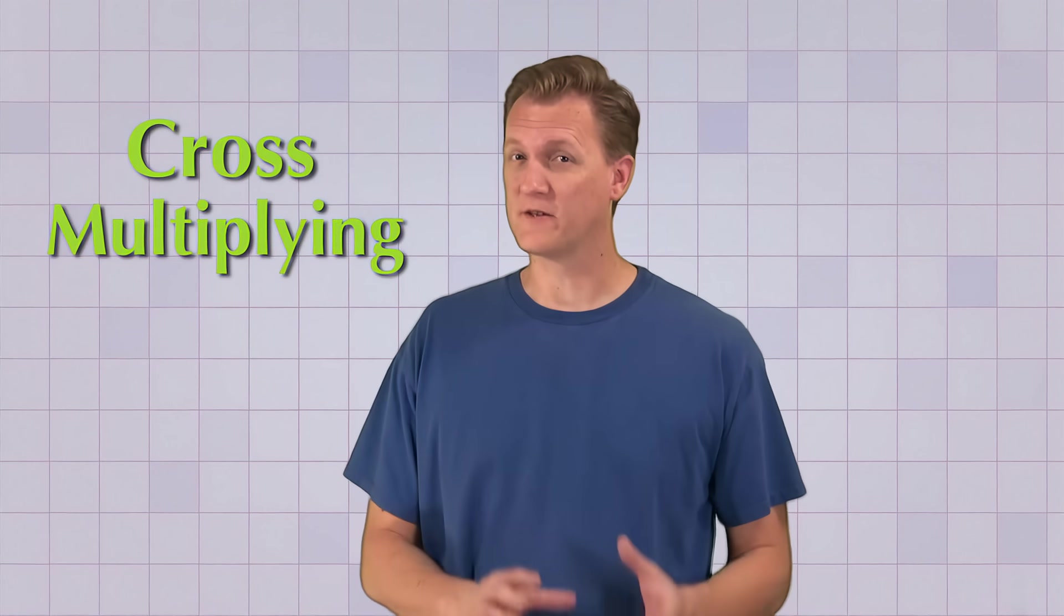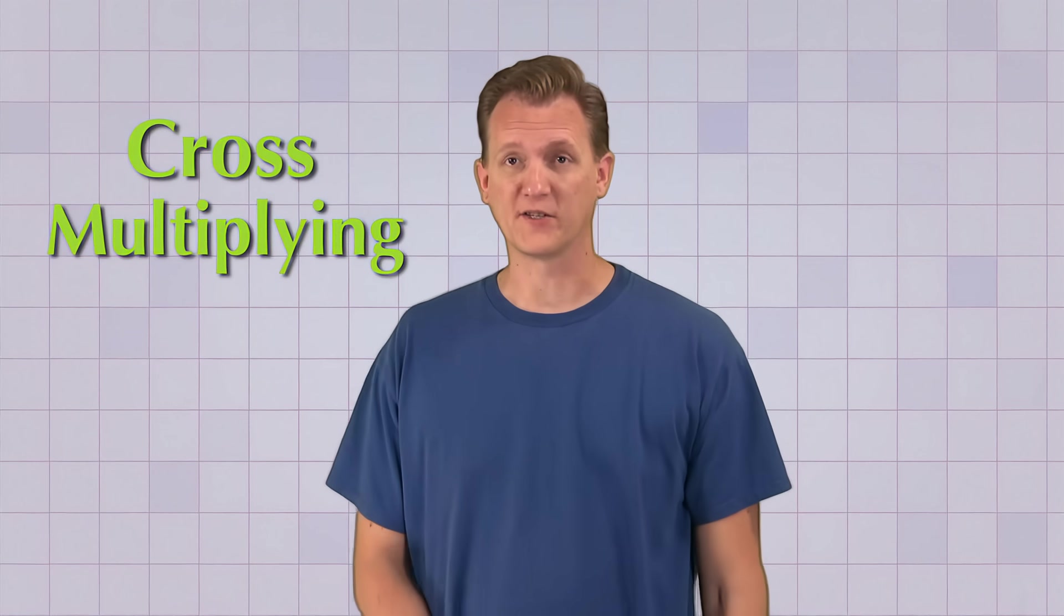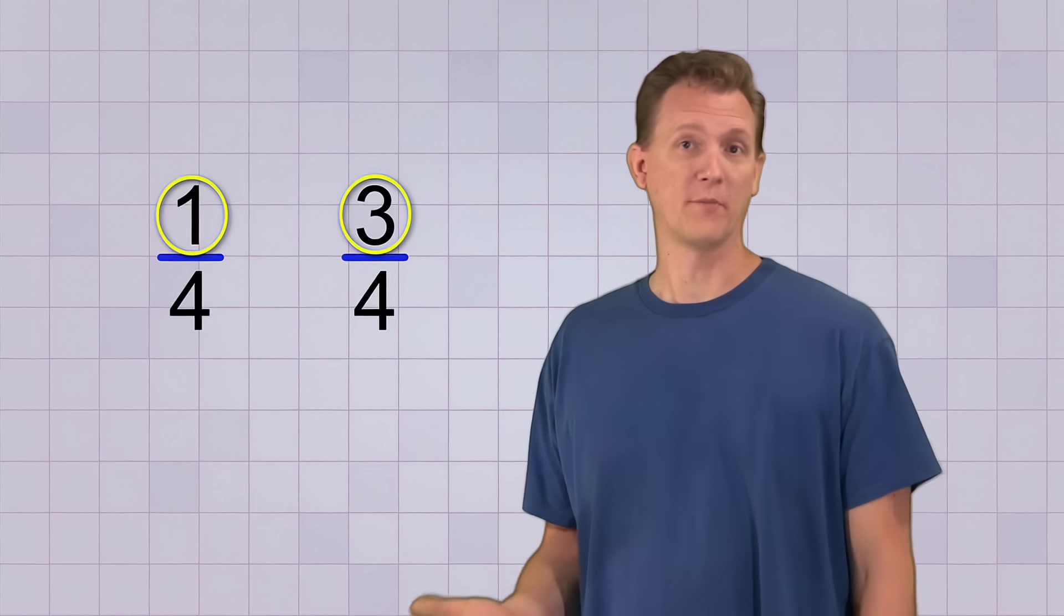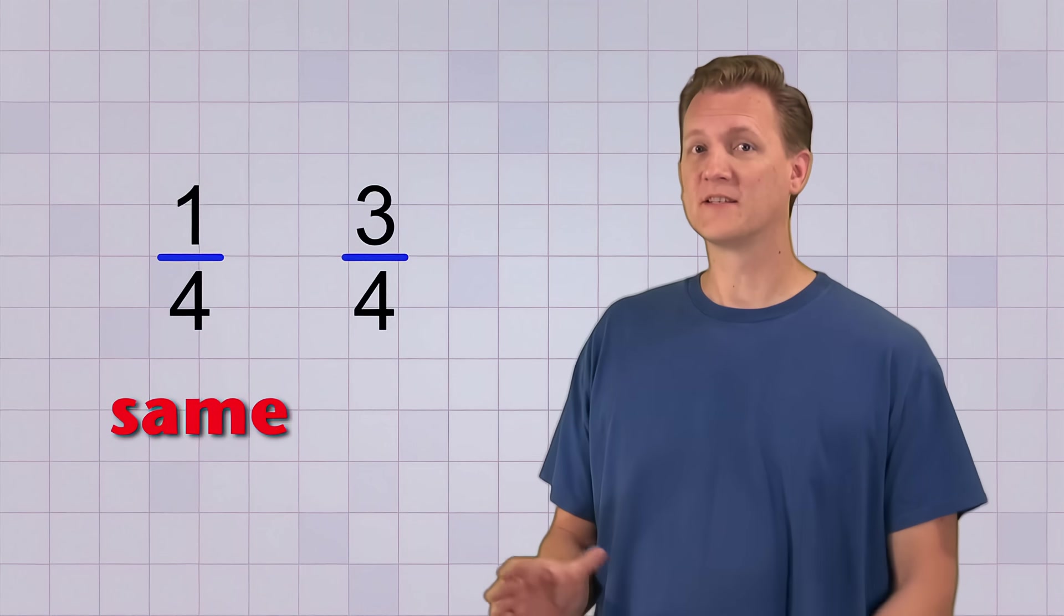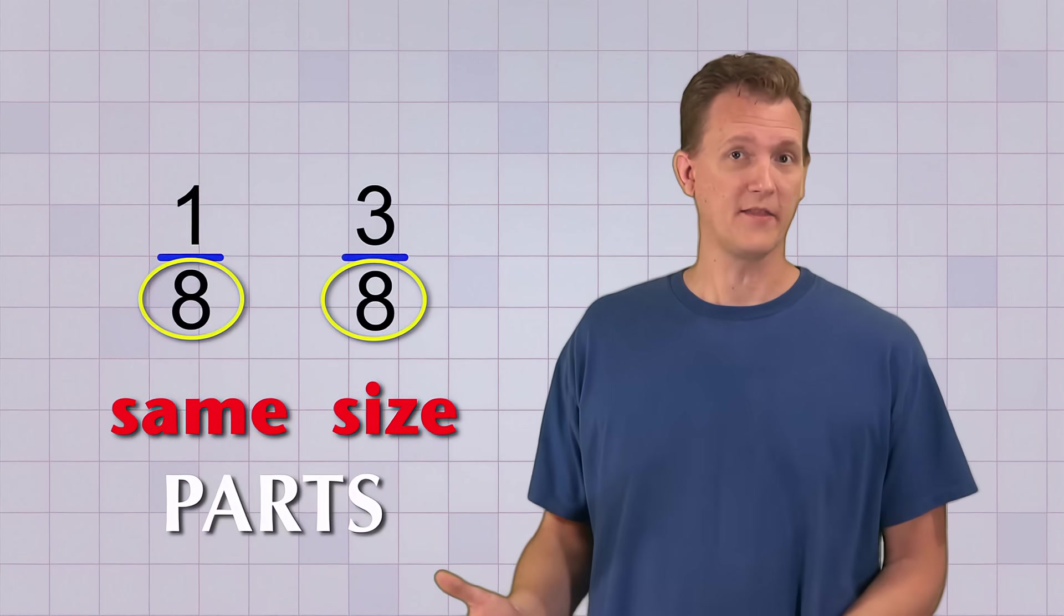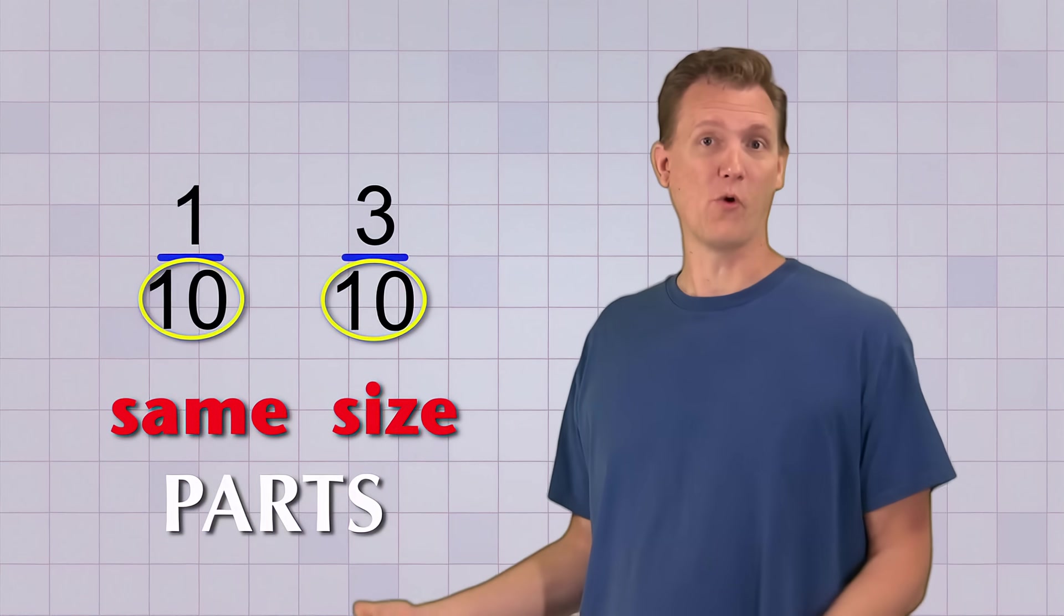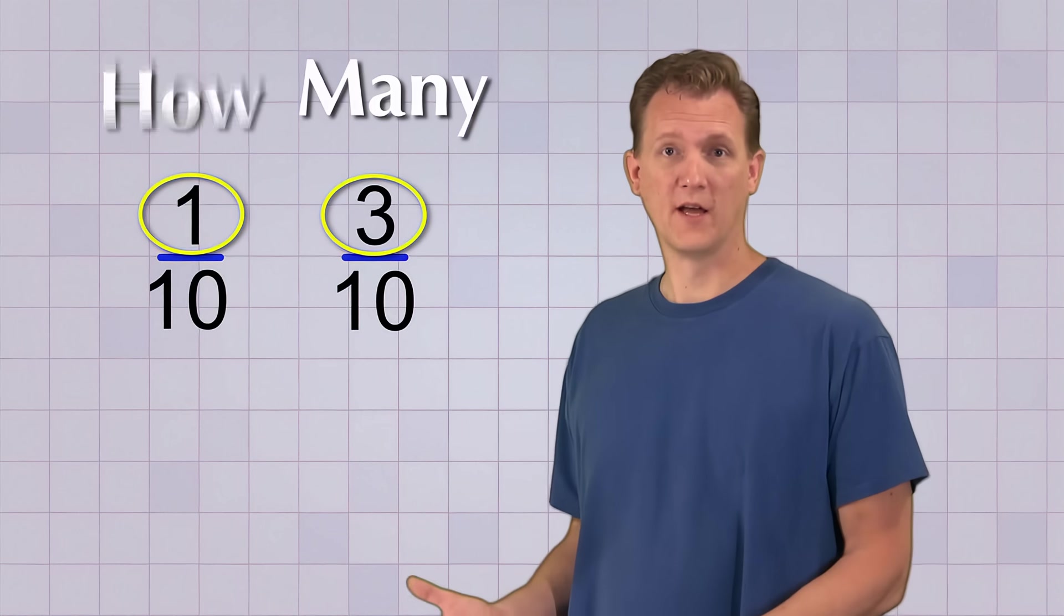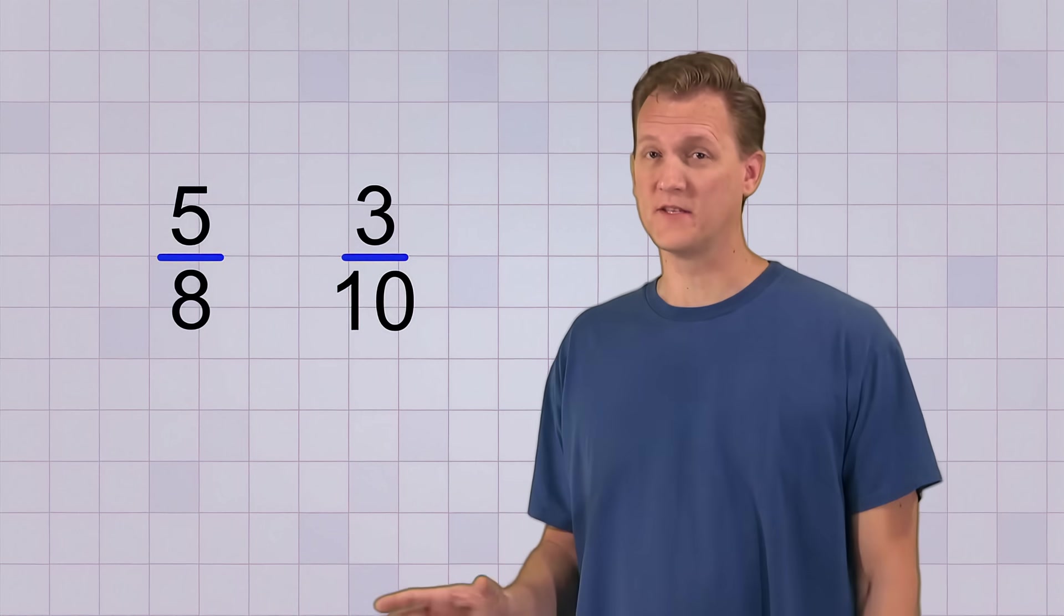The first method is called cross-multiplying, and it takes advantage of the fact that it's easy to compare fractions with the same bottom numbers. If two fractions have the same bottom numbers, then we can just compare the top numbers. That's because we're comparing the same size parts. We're comparing fourths to fourths, eighths to eighths, tenths to tenths, and so on. And the top number just tells us how many of those parts we have. So it's easy to see that 5 eighths is more than 3 eighths.